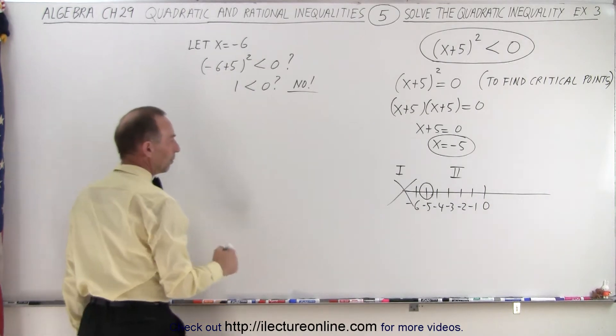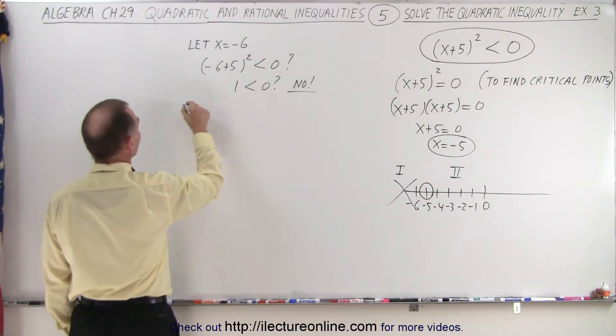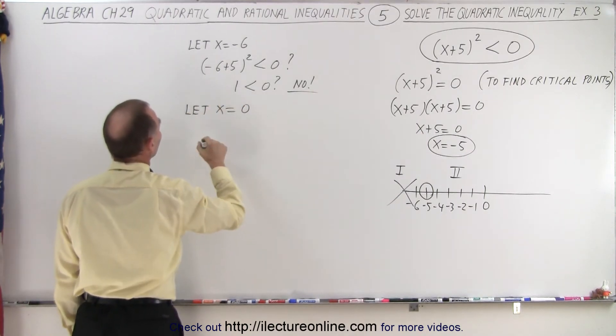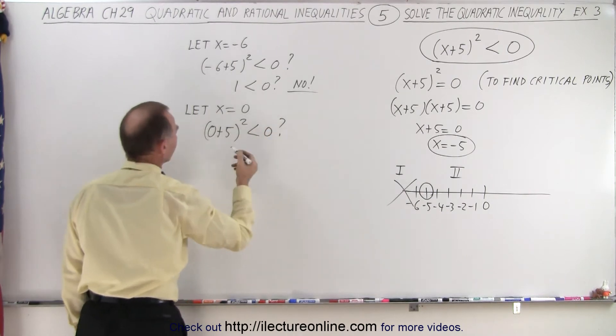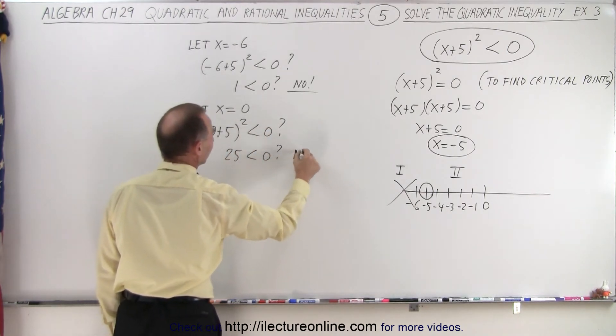So let's try a point on the right. And of course, the easy point always to let x equal 0 if that's one of the points in the region. Let x equal 0. And so we have 0 plus 5 quantity squared. Is that less than 0 question mark? And of course, we have 25 less than 0 question mark. And the answer is no.